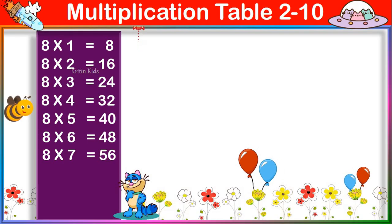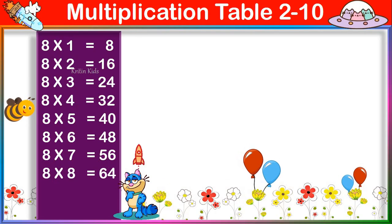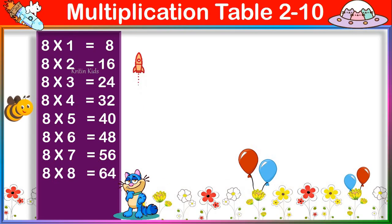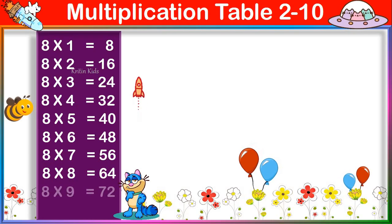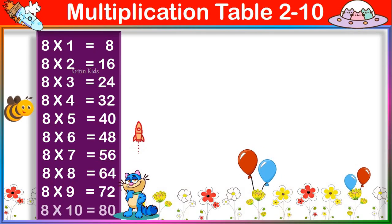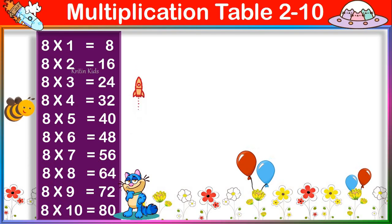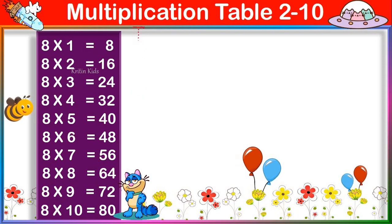8 seven's are 56, 8 eight's are 64, 8 nine's are 72, 8 ten's are 80.